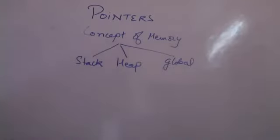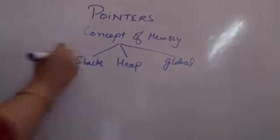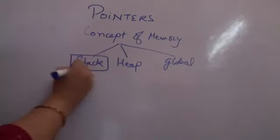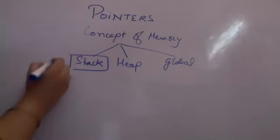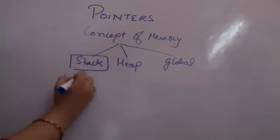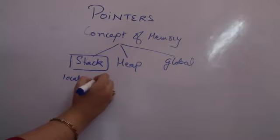How is it divided? What is there in stack, what is in heap, and what is there in the global area? You have to understand that before we move on to the pointers. What stack is having is, whenever you create a local variable, whenever you create local variables, they are all created in stacks.